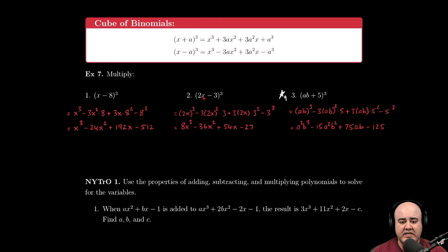Plus 3 times the first, 2x, times the second squared, 3 squared. And then finally minus the cube of the last term, or the cube of the second term, which is 3 cubed.